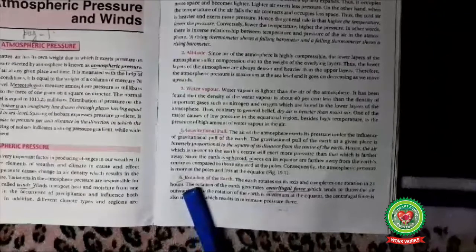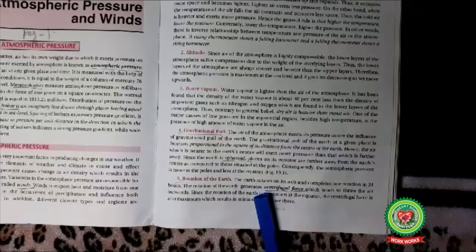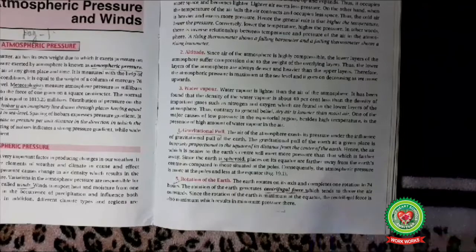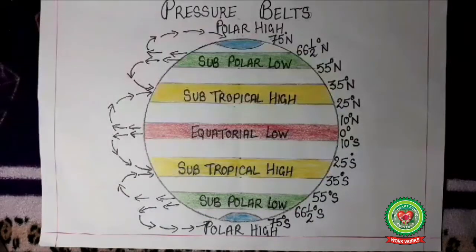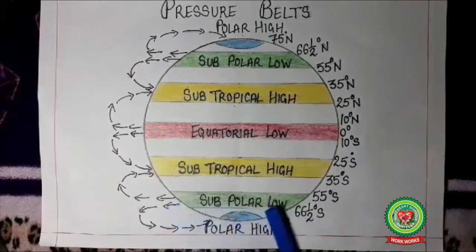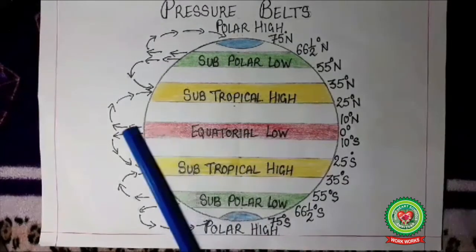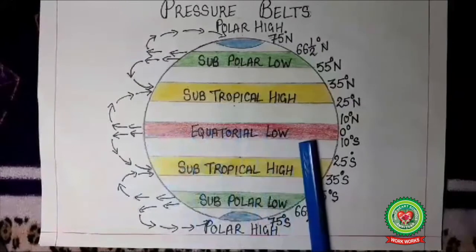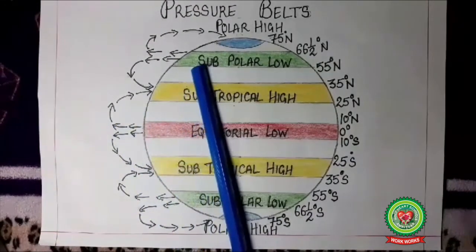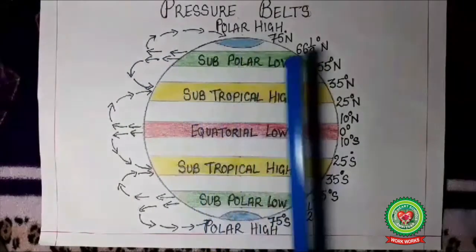The last factor affecting atmospheric pressure is rotation of the earth. The earth rotates on its axis and completes one rotation in 24 hours. Due to this rotation, a force known as centrifugal force is produced. Centrifugal force throws the air outward from a given area. At the equator and at 60° North and 60° South latitude (near the poles), centrifugal force causes the air to be thrown out — in the equatorial area and in the subpolar region, air is thrown out due to centrifugal force produced by the rotation of the earth.